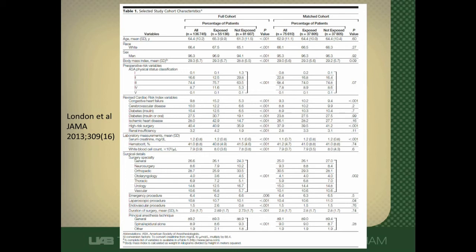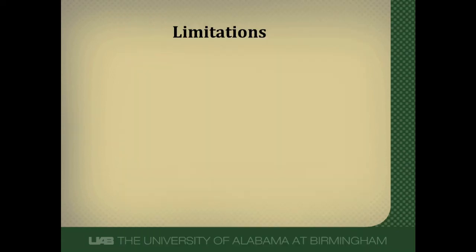If you do this, we should see in a propensity-matched group that baseline covariates are very similar. This is again Table 1 from the London study, now showing both sides — pre-propensity matching and post-propensity matching. What you can see is that numbers that were very different are now very similar. Our propensity score has done a good job of balancing covariates between those exposed to beta blockers and those not on beta blockers.